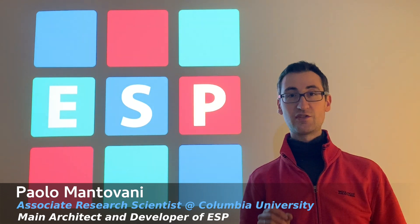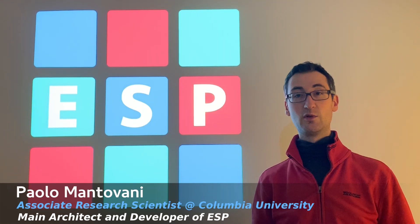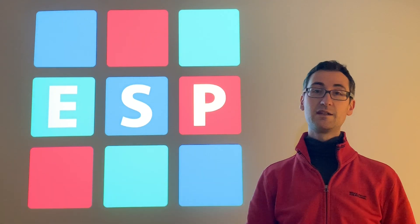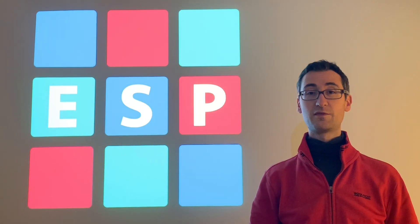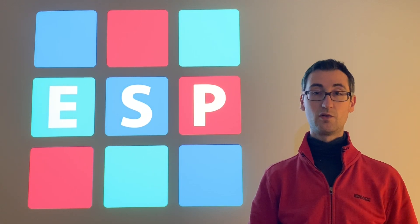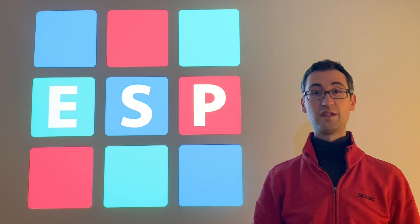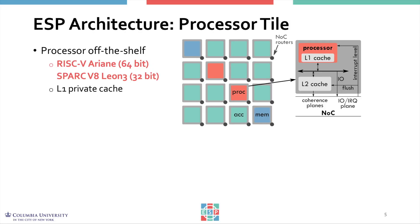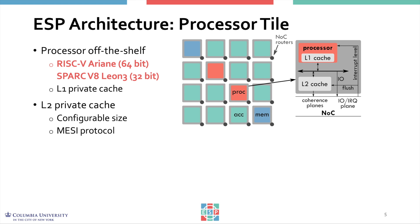Each processor tile contains a processor core chosen among those available in the RTL library. Currently you can choose among the Ariane RISC-V 64-bit core from ETH Zurich, or the Leon 3 32-bit SPARC V8 core from Cobham Gaisler. Both cores can boot Linux, and both come with their private Level 1 cache. The ESP tile augments these cores with a unified private Level 2 cache of configurable size, and the processor is integrated into the ESP distributed system transparently — no ESP-specific software patches are needed to boot Linux.